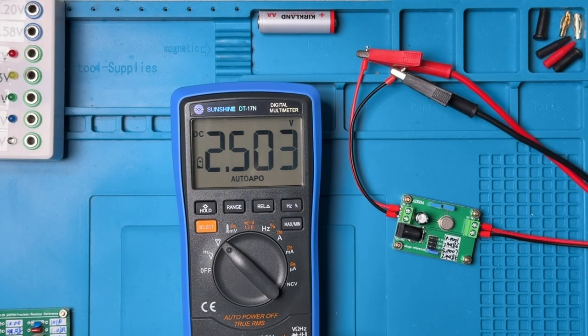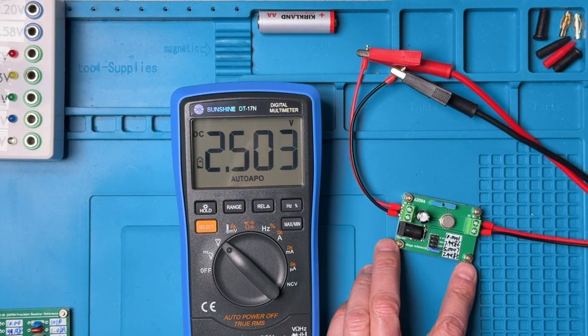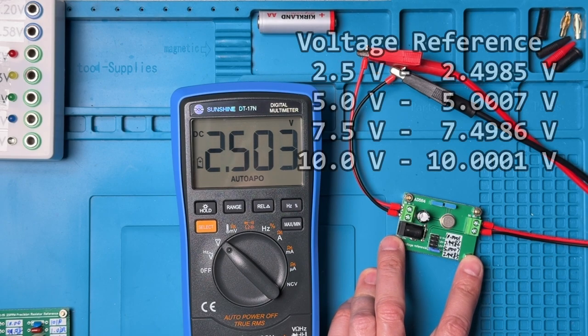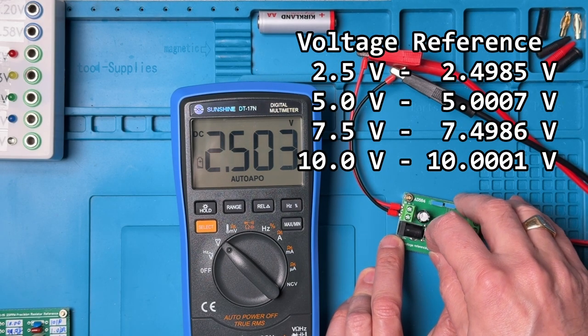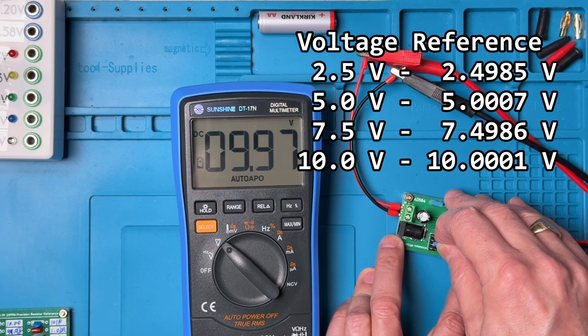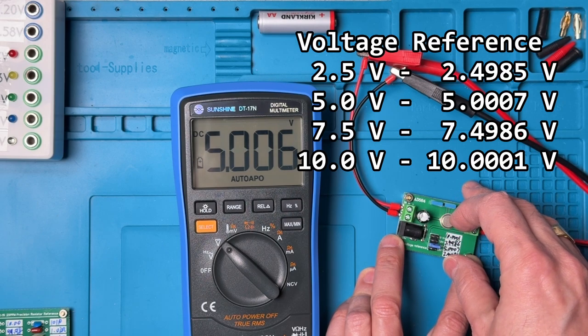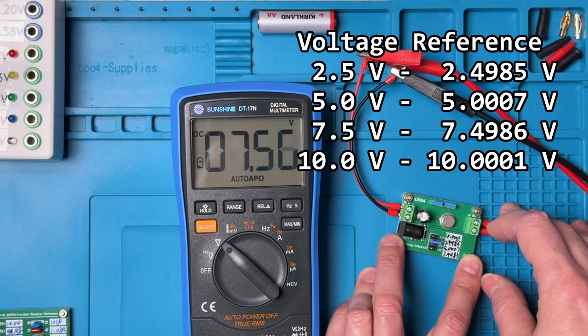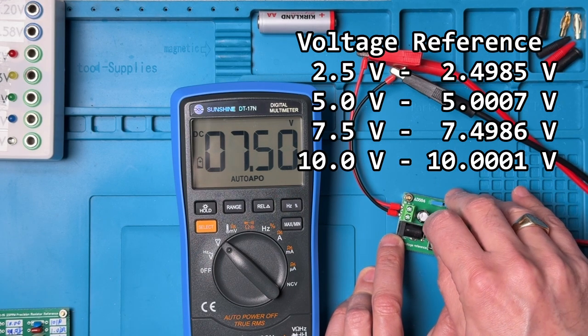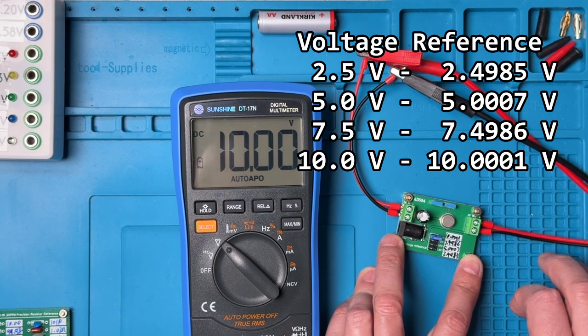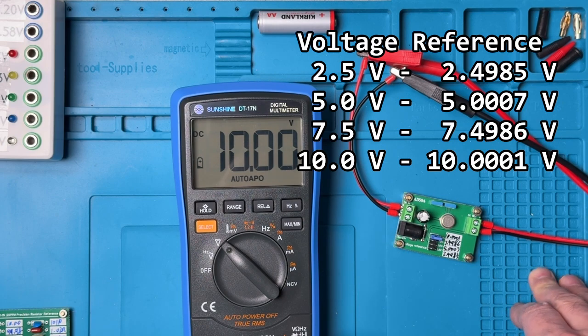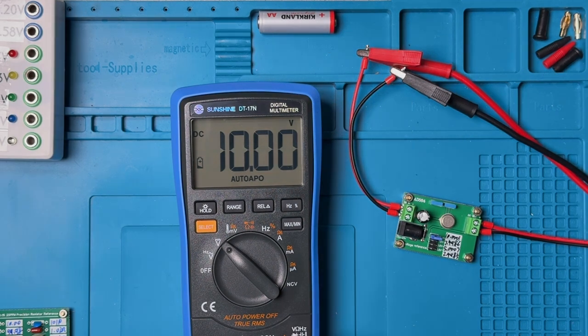So we're going to start with DC voltage. We've got a reference source here and the exact reference values are up in the overlay. So this is 2.5 volts, 5 volts, 7.5 volts, and 10 volts. So we can see pretty good readings there on the voltage. Very nice.